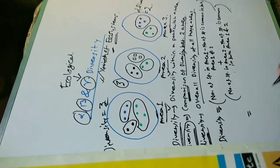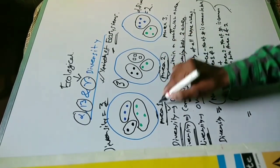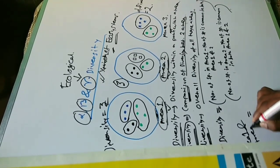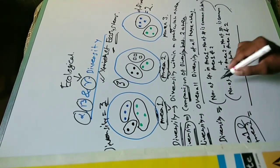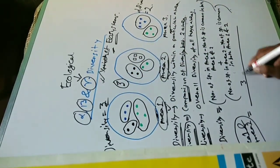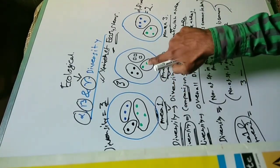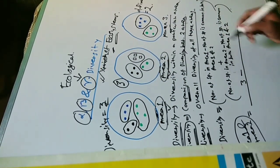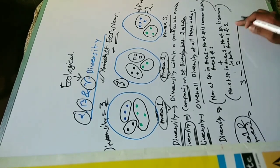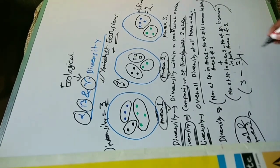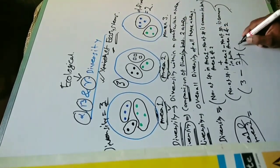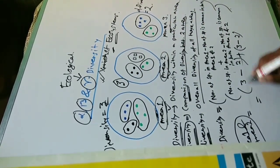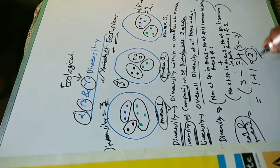Let's calculate the beta diversity for area 1 and area 2. The number of species in area 1 is 3. The number of species common in both area 1 and 2 — this one and this one are common, but this one is different — so 2 species are common. Then plus the number of species in area 2, which is 3, minus the number common in area 1 and 2, which is 2. So: 3 minus 2 is 1, plus 3 minus 2 is 1, giving a beta diversity of 2.